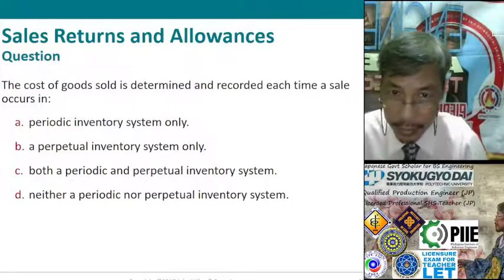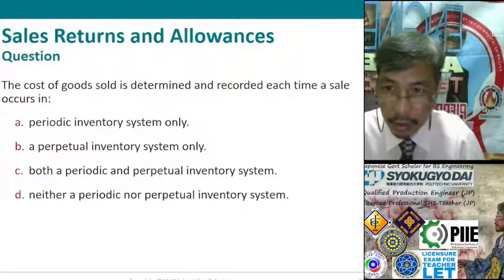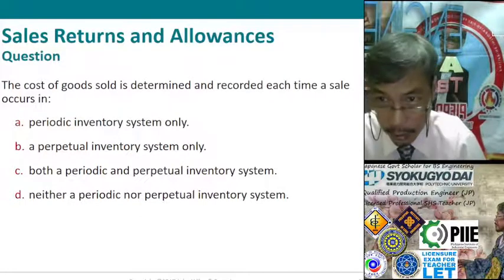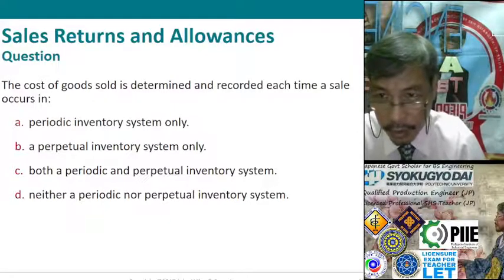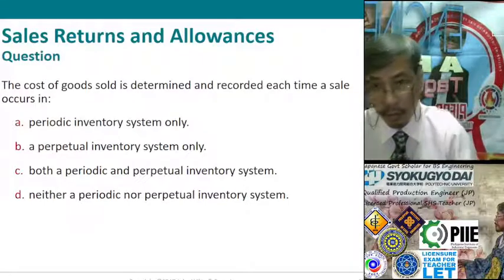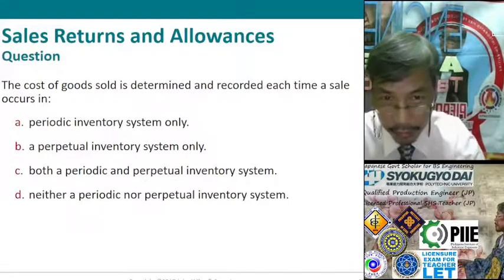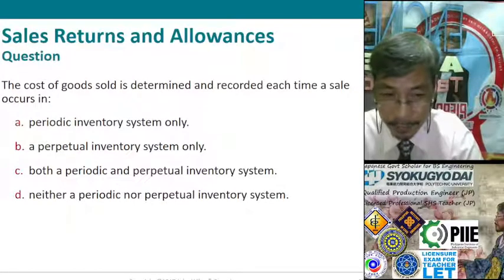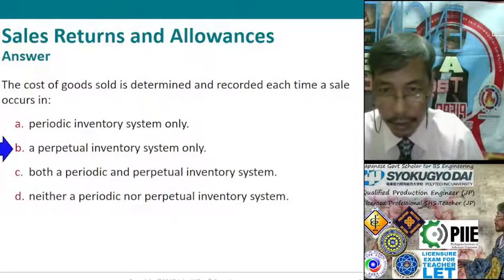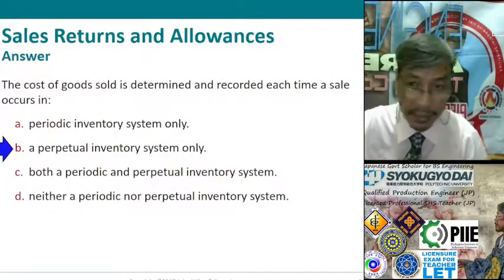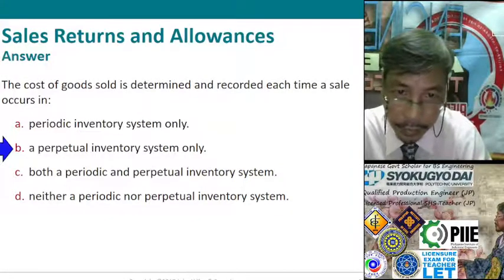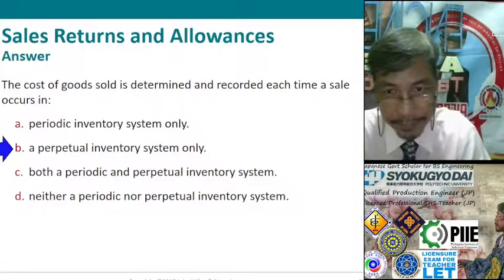Check your understanding — question: The cost of goods sold is determined and recorded each time in: A) Periodic Inventory System only, B) Perpetual Inventory System only, C) Both Periodic and Perpetual, D) Neither. The answer is B — Perpetual Inventory System only — because in the perpetual system, recording is continuous, on a per-unit, per-transaction basis.